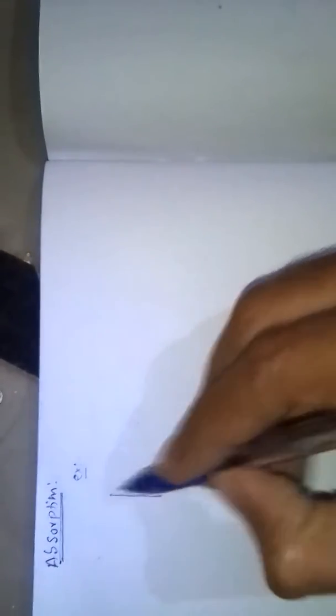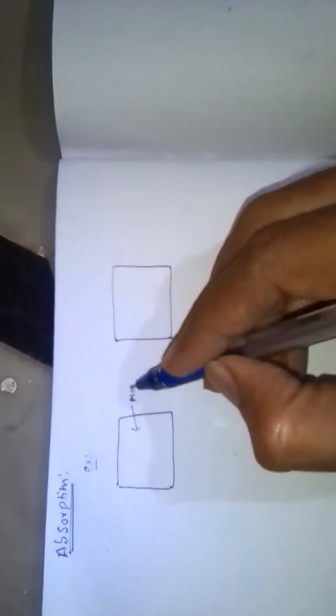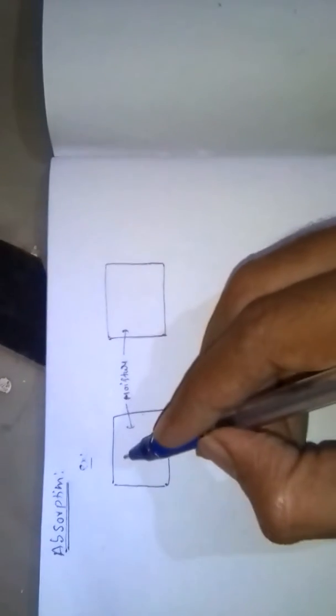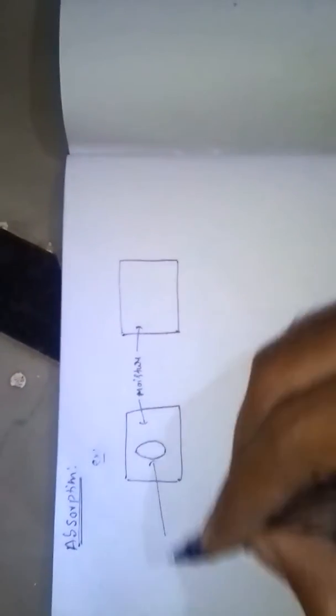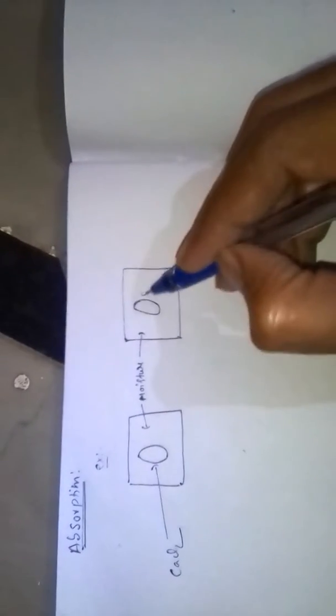This is different from adsorption. If we take two boxes, these two boxes are filled with moisture. Moisture air is present. In this box we place calcium chloride, CaCl2. Here we place silica gel.